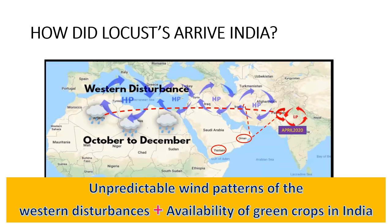The reason locusts arrive in India is unpredictable wind patterns of western disturbances, plus the availability of green crops in India. Due to climate change, the wind pattern is changing, so western disturbances in India are becoming more unpredictable.